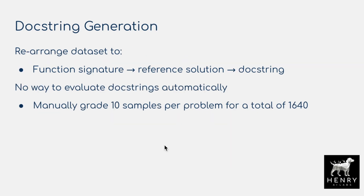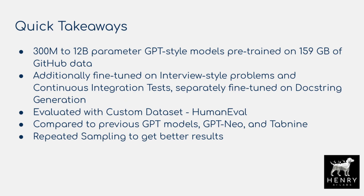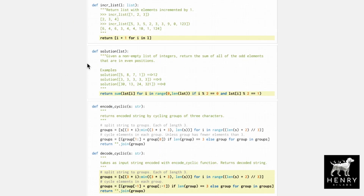They also pivot to docstring generation — given the function signature and solution, generate a natural language description of the code. For fine-tuning, they rearrange the dataset: instead of function signature → docstring → reference solution, it becomes function signature → reference solution → docstring. Now that's the generation task for fine-tuning to generate docstrings in the left-to-right autoregressive style.